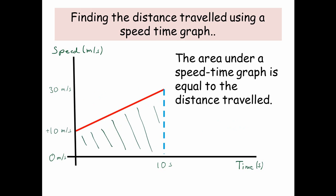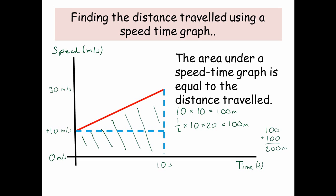This even applies if we're accelerating but don't start at 0. One technique is to split the shape into two sections: a rectangle at the bottom and a triangle above. The area of the rectangle is 10 metres per second times 10 seconds, which is 100 metres. The triangle is a half times 10 times 20 — the height is 20 because we go from 10 metres per second up to 30 metres per second, a difference of 20. Adding the two together, the total distance travelled in 10 seconds is 200 metres.